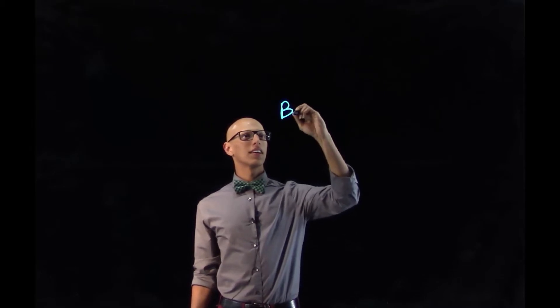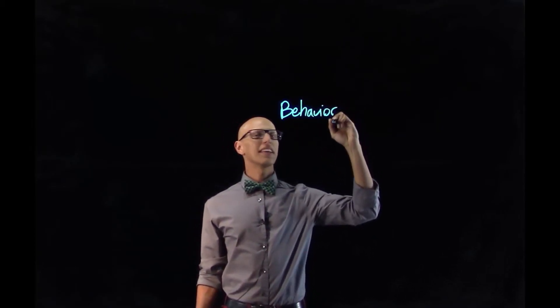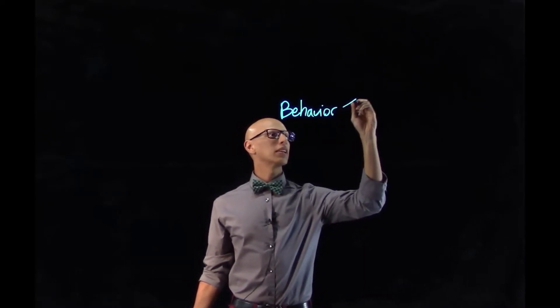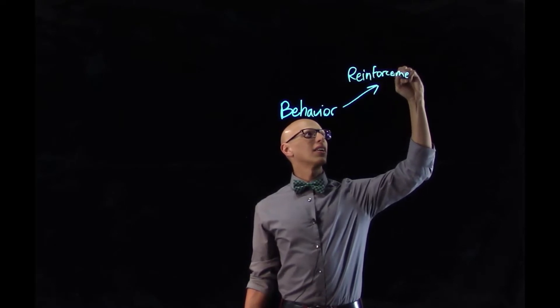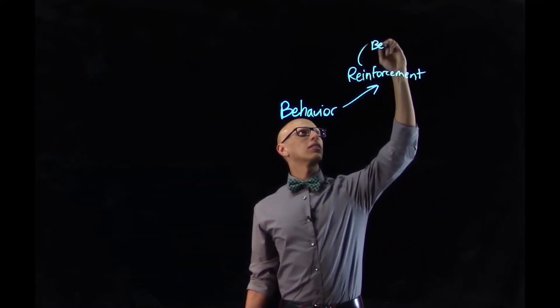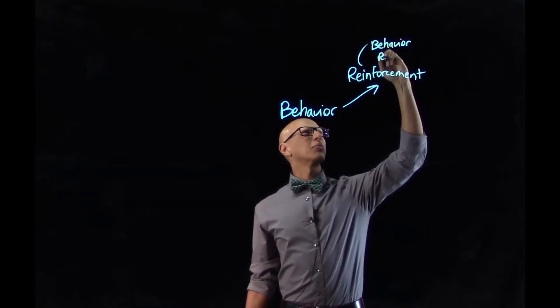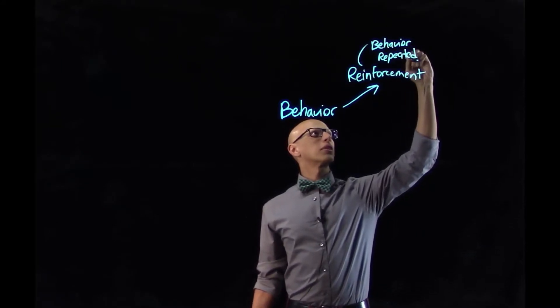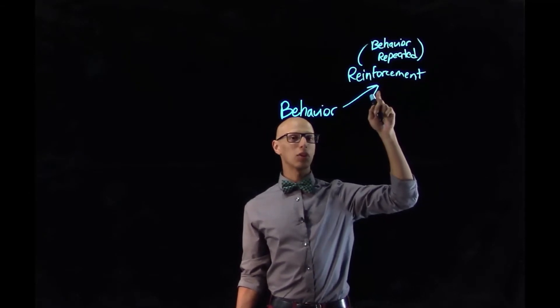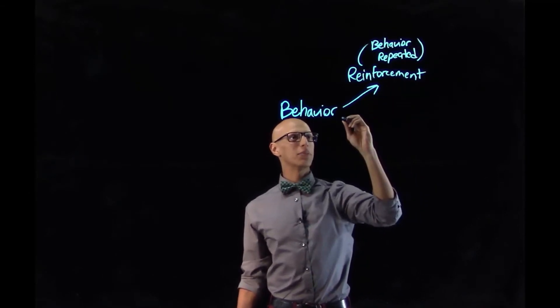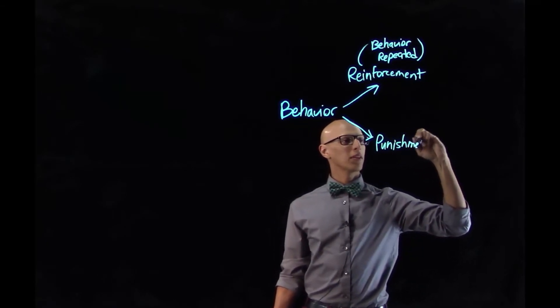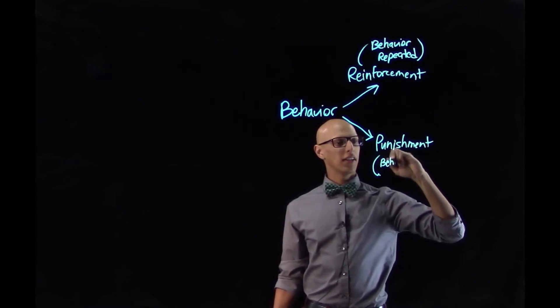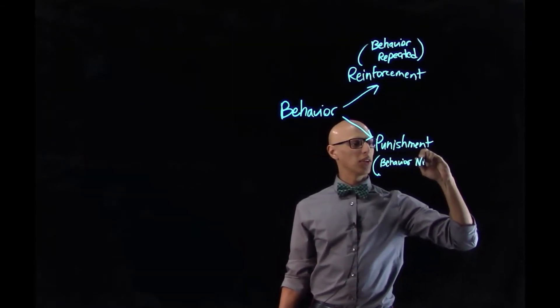First, look at the behavior. If the behavior is increasing or being repeated, it's reinforcement — behavior is repeated or likely to happen again. Ask yourself: is the behavior likely to happen again? If so, it's reinforcement. If the behavior is decreasing or not being repeated, then it's punishment.